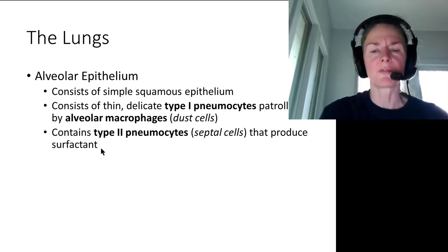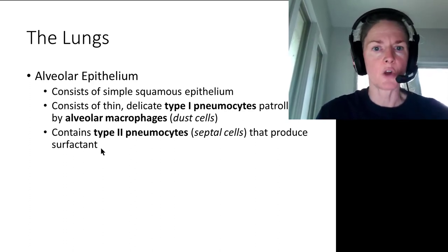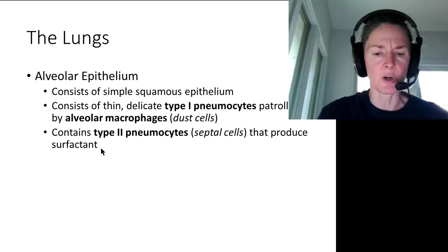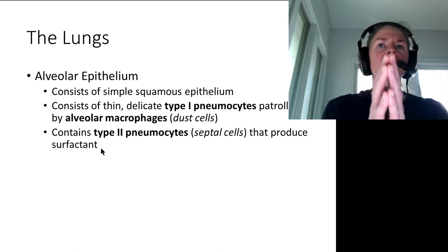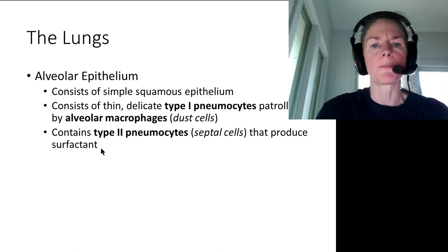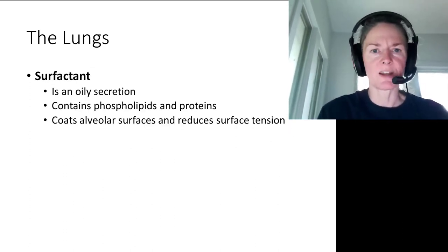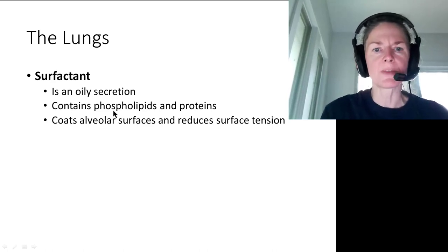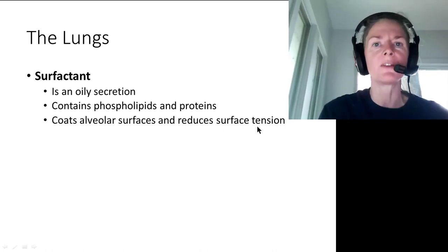Without sufficient surfactant from type 2 pneumocytes, the alveoli collapse and are very hard to reopen — the pressure required to open them is much greater, making inhalation harder. Surfactant is an oily secretion containing phospholipids and proteins that reduces surface tension and keeps the alveoli open.